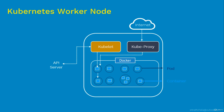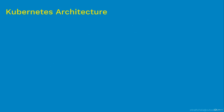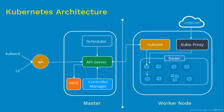Now let's combine the Kubernetes master and worker node into the complete Kubernetes architecture cluster. On the master node we have: API server, scheduler, controller, and etcd. On the worker node we have: kubelet, kube-proxy, pods, and containers. In most cases, the master node does not contain any containers — it just manages the workload on worker nodes and ensures the cluster is running healthy. Kubernetes supports up to 5,000 worker nodes inside one cluster.